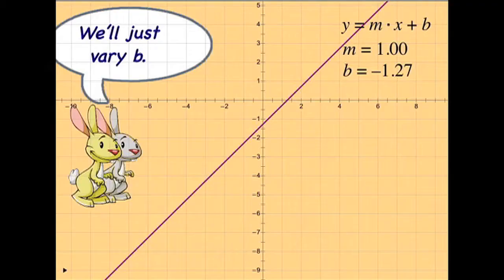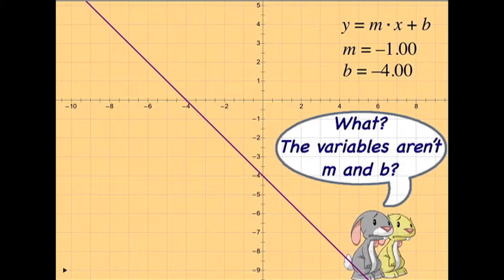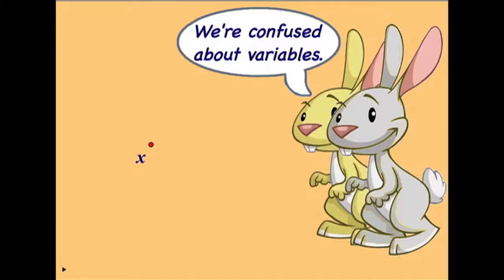So they look to find some variation in a Cartesian graph. They change the value of b, they change the value of m, but they've never seen the x and the y being variables in that graph. So they think the variables are m and b. Very confusing.